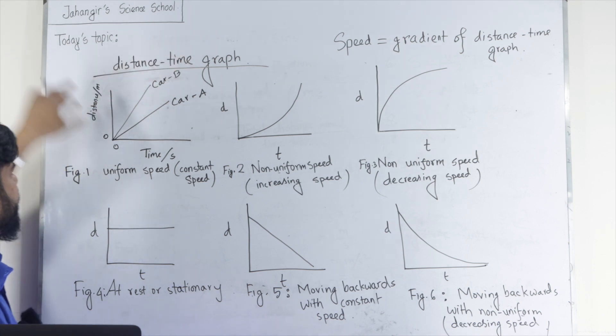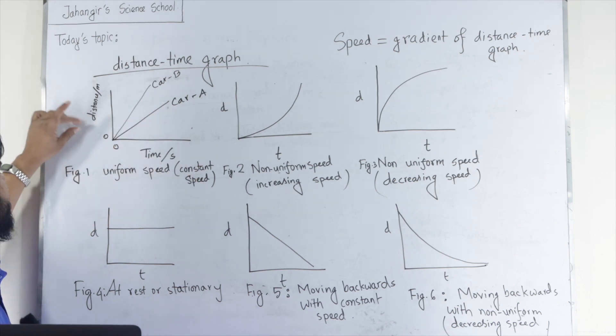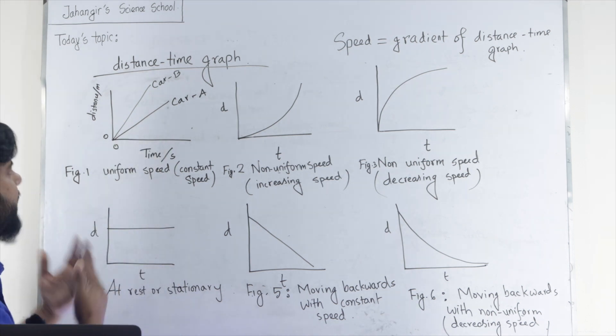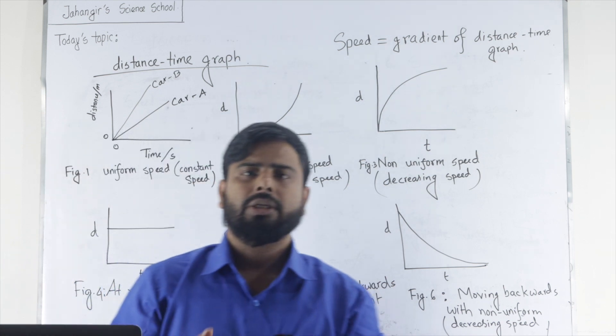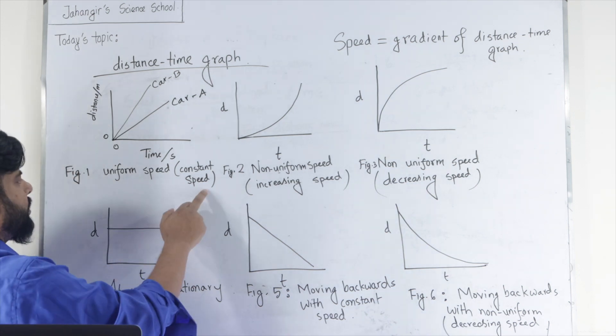In Distance Time Graph, time is independent variable and distance is dependent variable. Time in second and distance in meter. If the distance time graph is a straight line, then it shows the object moves with constant velocity or constant speed.